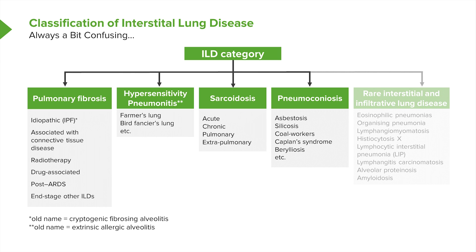The last category consists of very rare diseases, which won't be discussed in detail today. These are often called interstitial lung diseases but have their own distinct patterns and types of infiltrations.